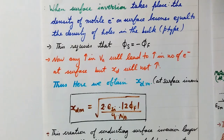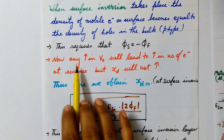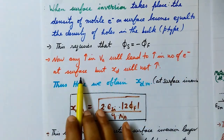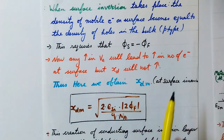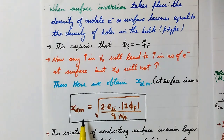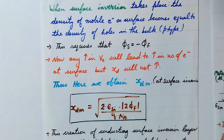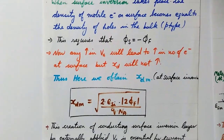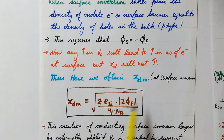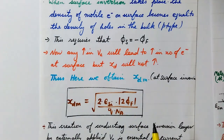At the onset of surface inversion, any further increase in Vg will not increase the depth of the depletion layer but will increase the number of electrons at the surface. So we say that at the onset of surface inversion we achieve the maximum width of the depletion layer, termed xdm. To calculate xdm we use the previous equation and substitute φs equals minus φf. Inside the modulus, φs minus φf becomes minus φf minus φf equals minus 2φf, and taking the modulus gives 2φf. So xdm equals the square root of 2εsi·|2φf| divided by q·NA.